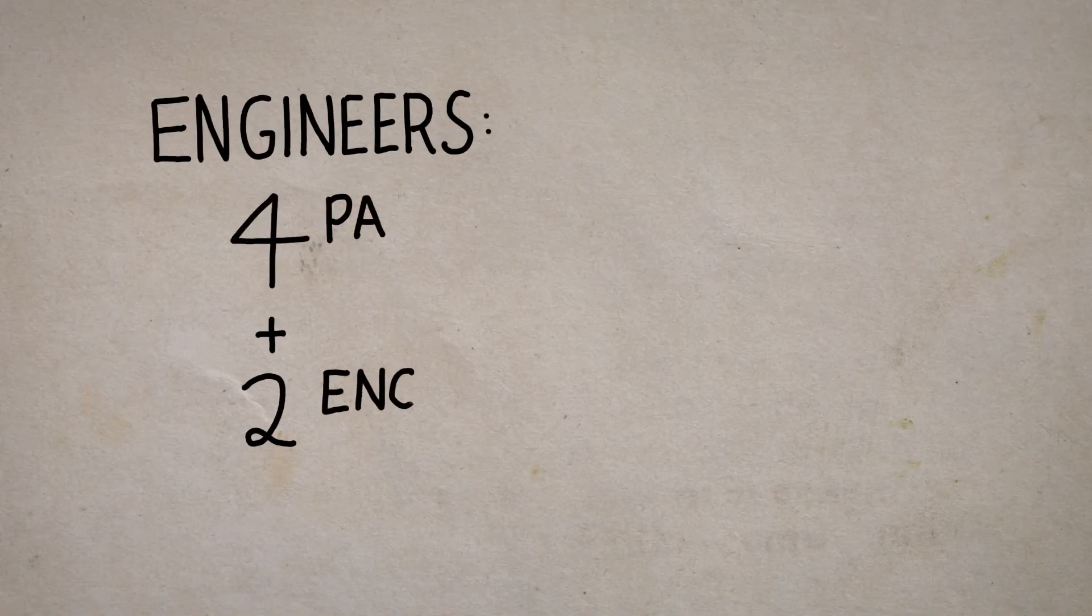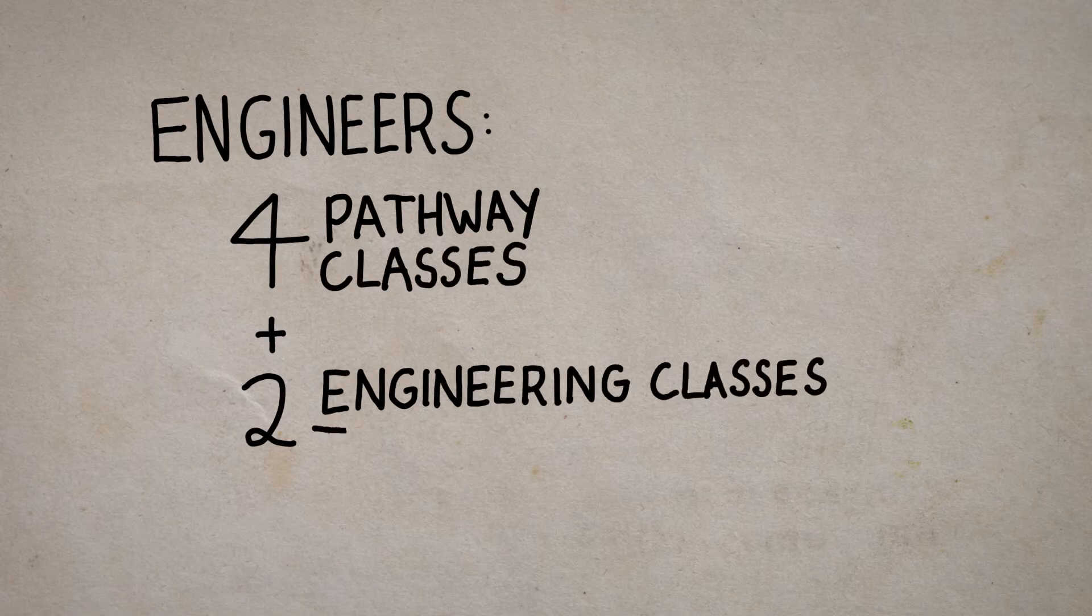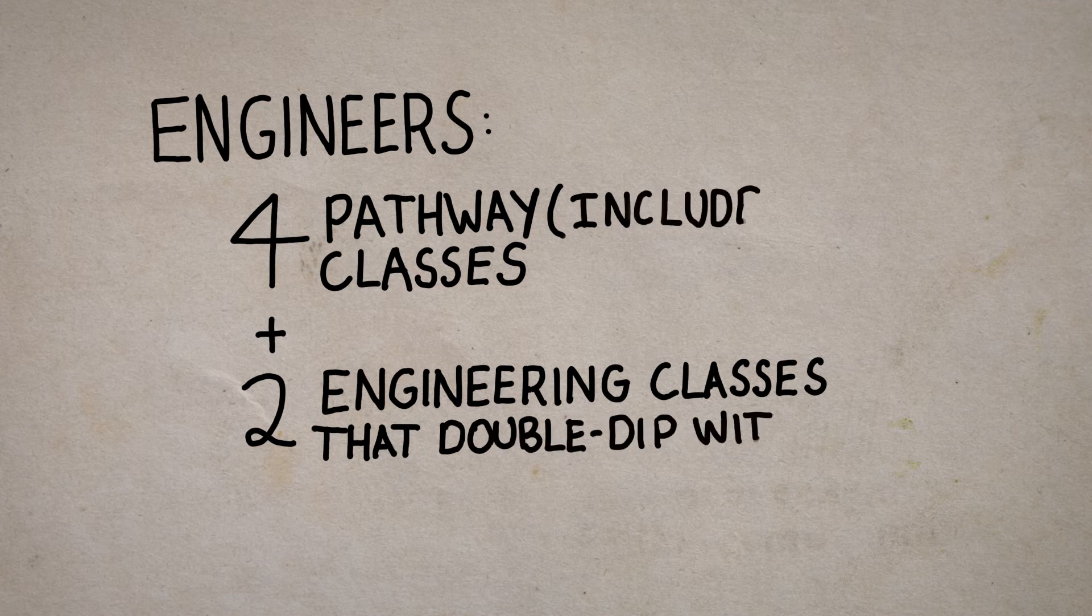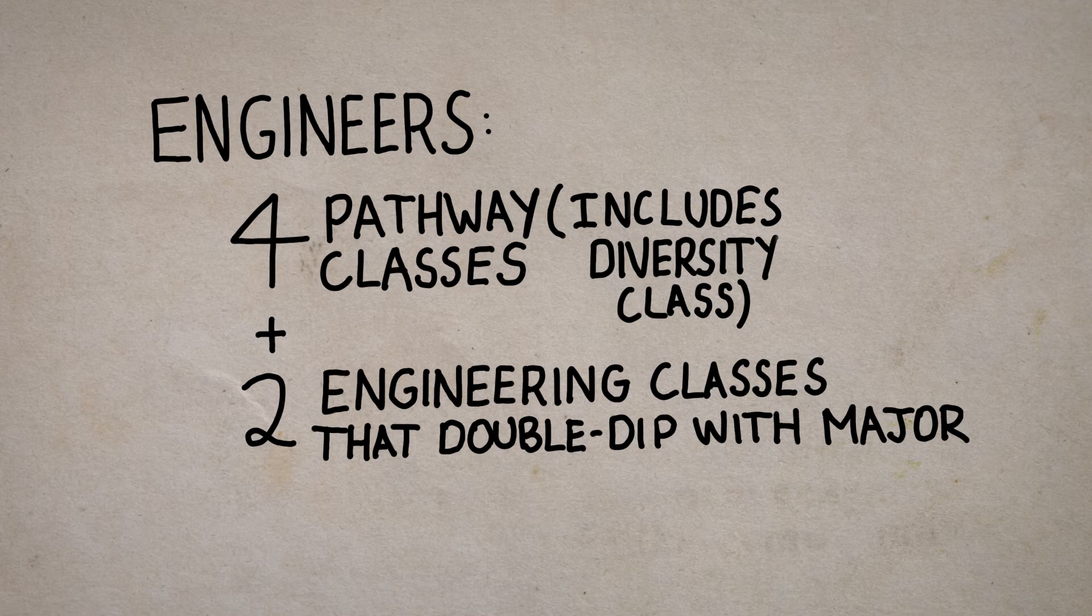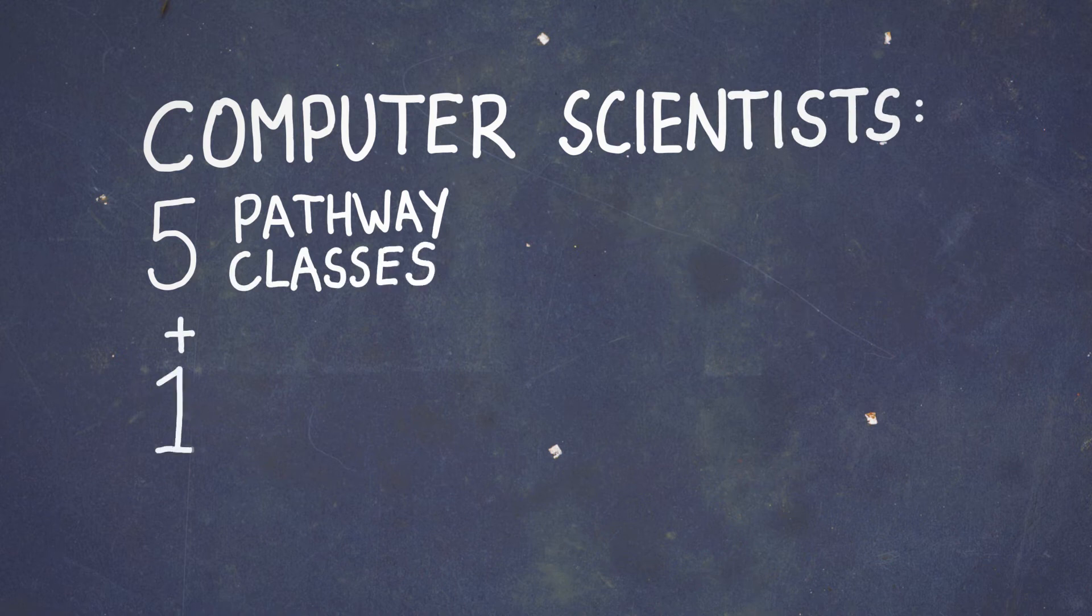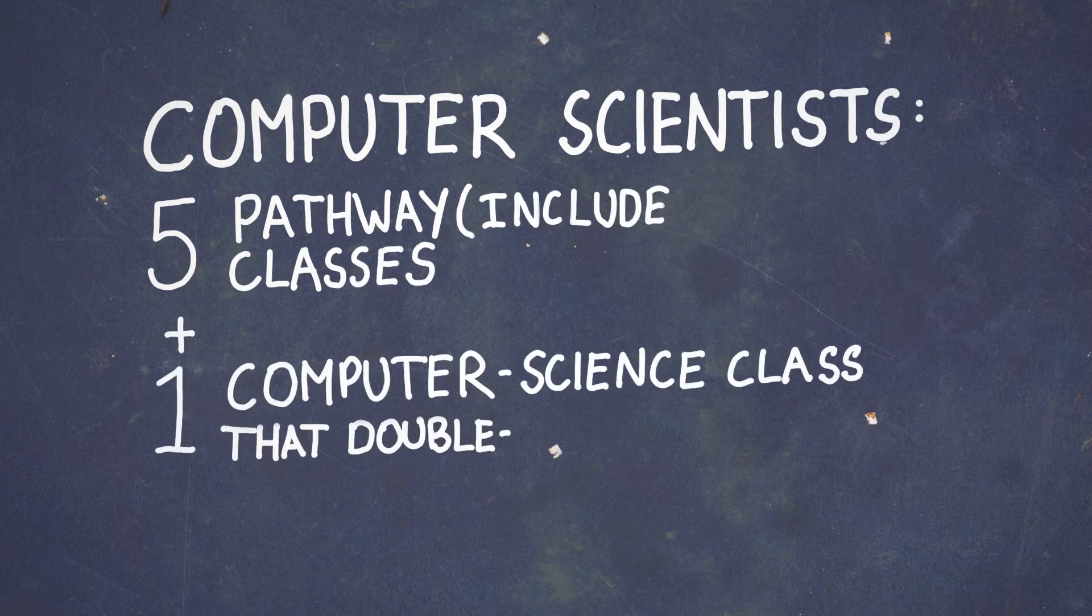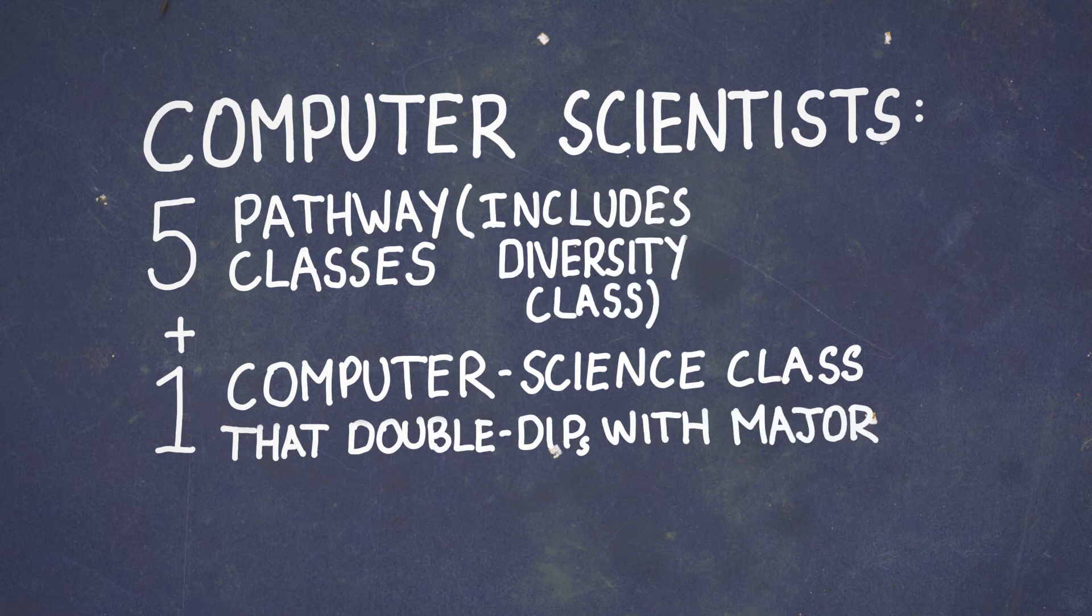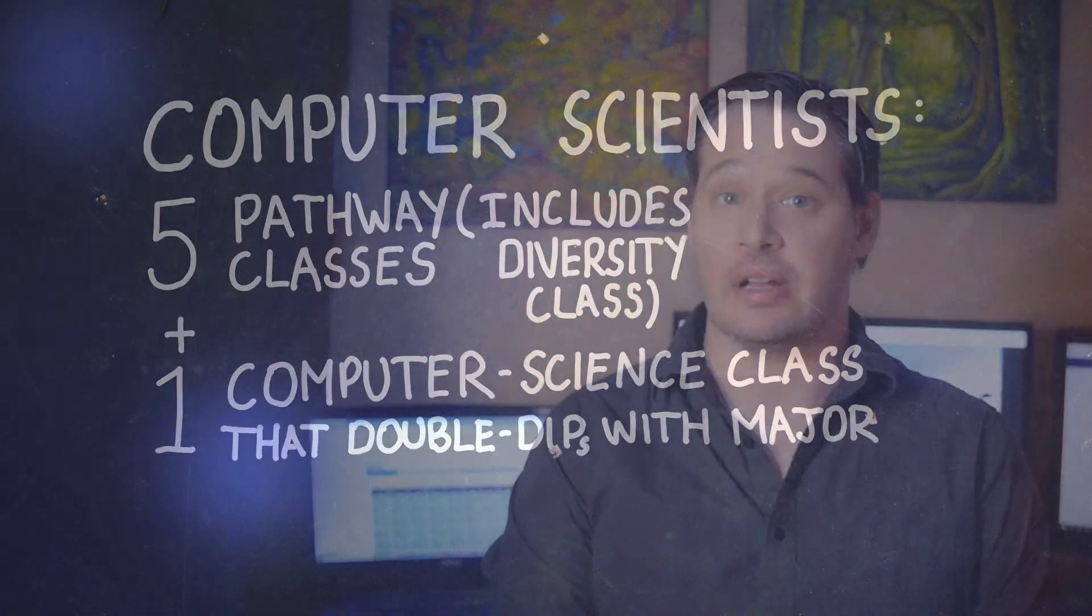As far as pathways, engineering students choose four pathway classes and two engineering classes that double dip with your major. Your diversity class and your major requirements in both List 3s double dip as pathway classes. Computer science majors choose five pathway classes and typically have one computer science class to double dip in the thematic pathways. If you have to add a pathway class to your schedule and need help selecting your pathway classes using the tool, contact your advisor.